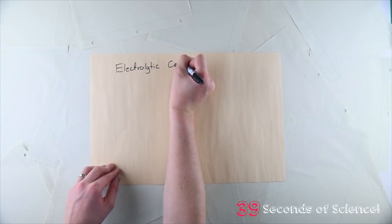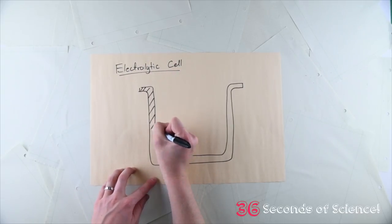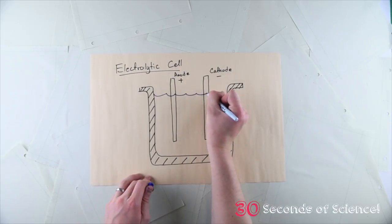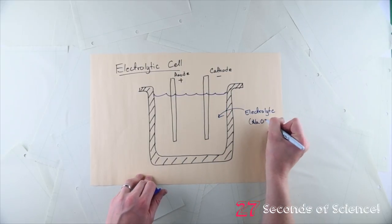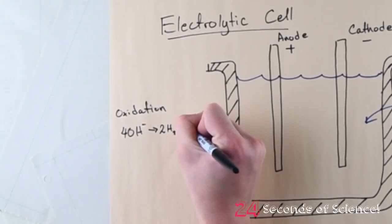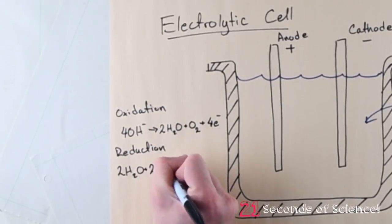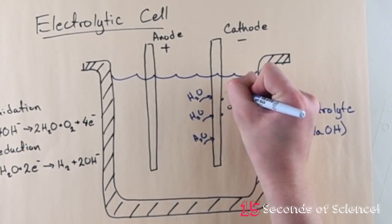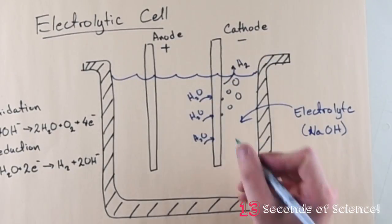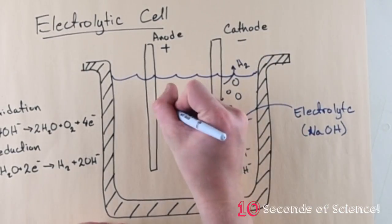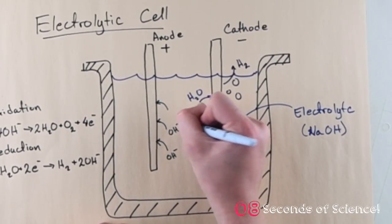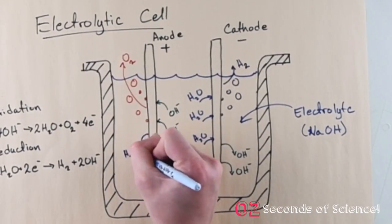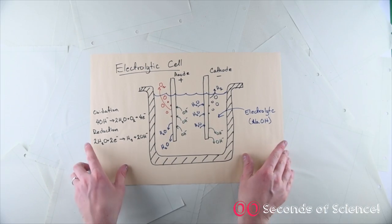An electrolytic cell is comprised of a positively charged electrode called an anode, a negatively charged electrode called a cathode, and a conductive medium called an electrolyte. We'll use a solution of sodium hydroxide and water for our electrolyte. During the electrolysis process, anions are oxidized and lose electrons, while cations are reduced and gain electrons. When an electric current is passed through the electrodes, water molecules interact with electrons on the surface of the cathode, reducing the hydrogen atoms and forming hydrogen gas and OH anions. On the other electrode, OH anions are attracted to the anode, where they undergo oxidation by depositing electrons on the anode to form water molecules and oxygen gas.